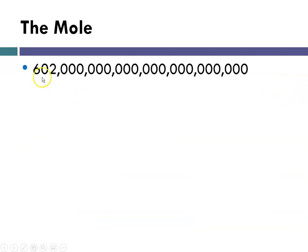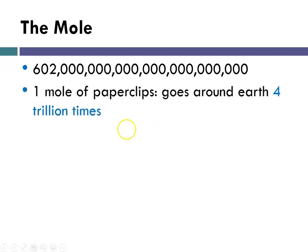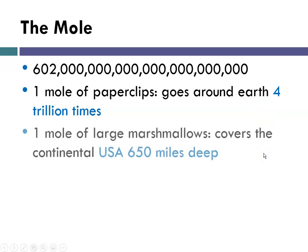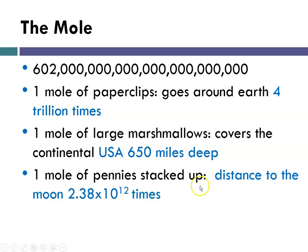So the mole has that many pieces in it, which is 6.02 times 10 to the 23rd, which is a fairly amazing number. So one mole of paper clips would go around the earth 4 trillion times. A mole of large marshmallows would cover the continental United States 650 miles deep. That's a lot of s'mores. And one mole of pennies stacked up would be the distance to the moon times 2.38 times 10 to the 12th times. So you can see that this is a fairly large number.